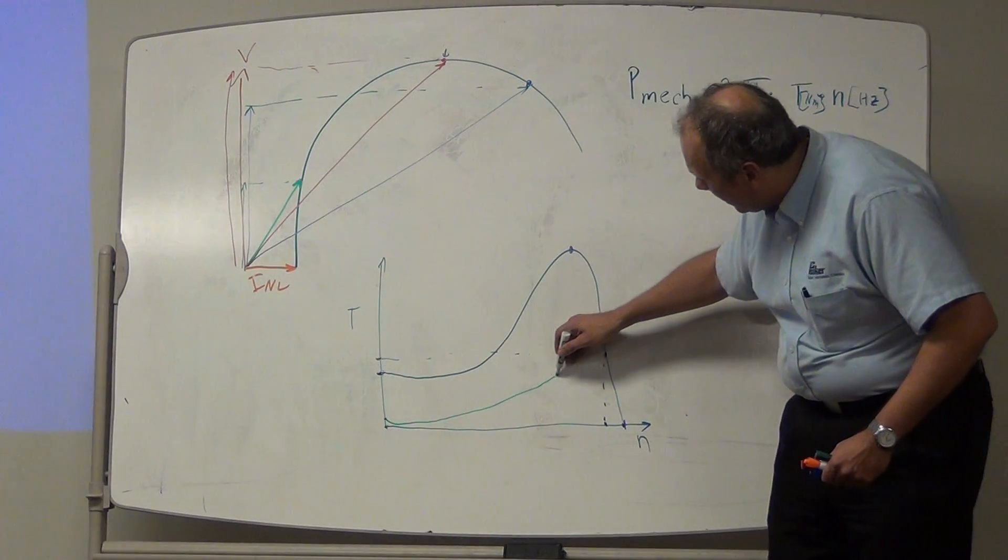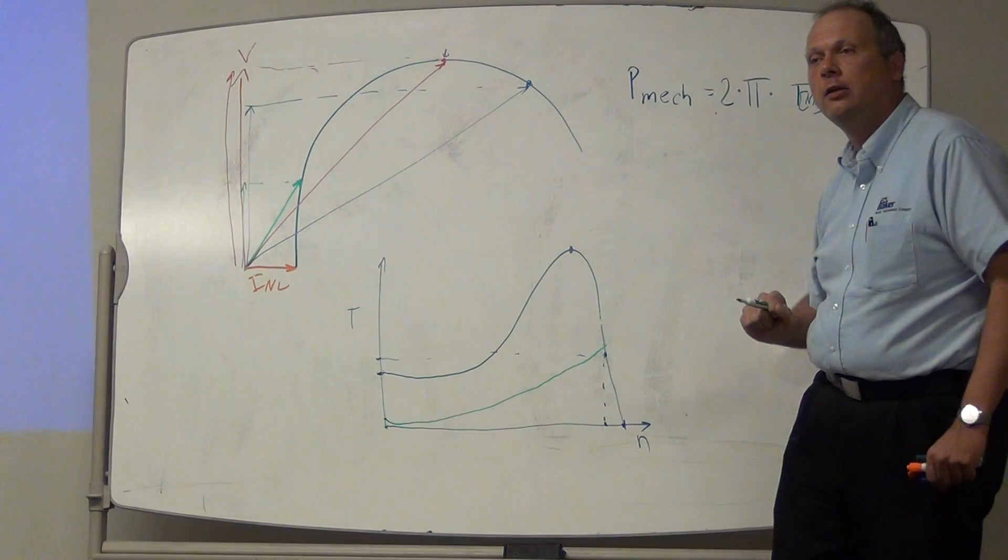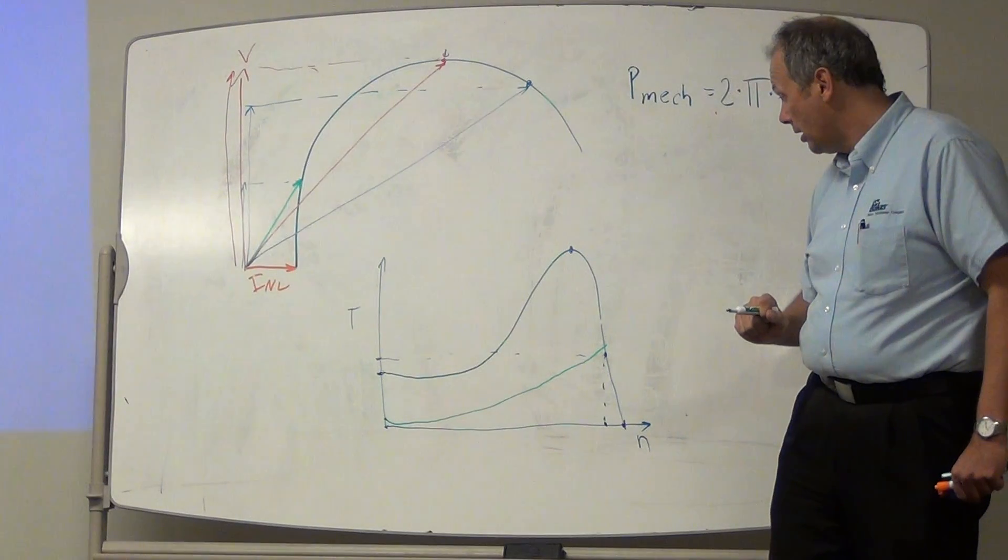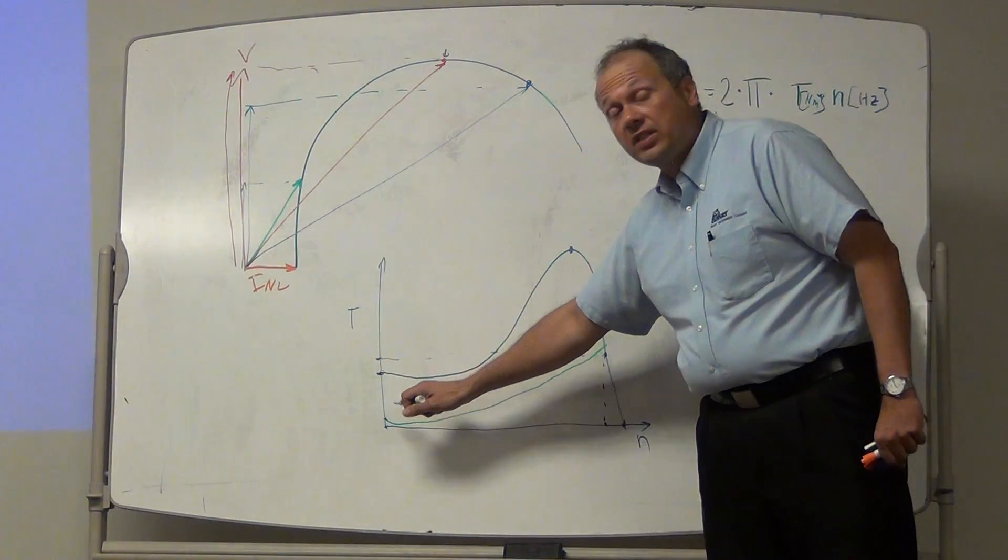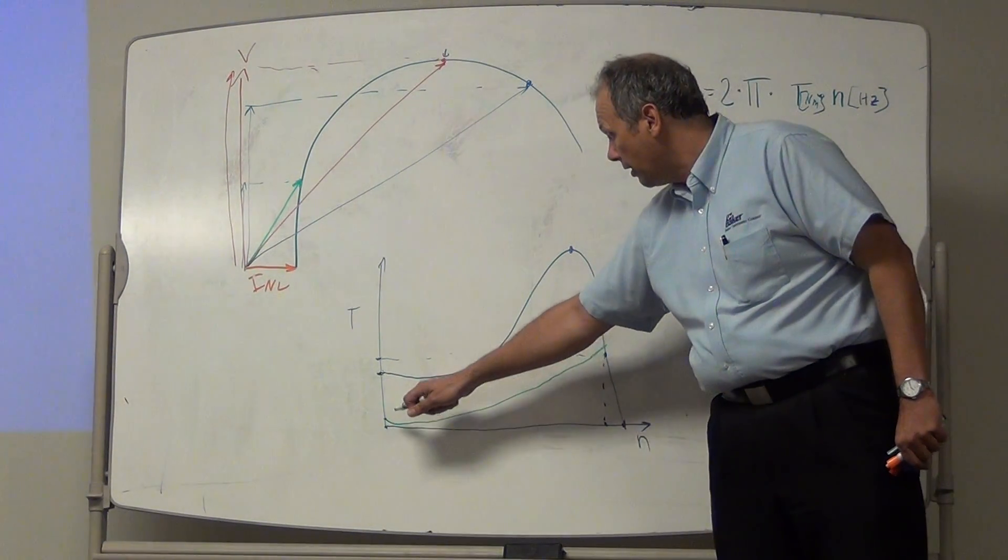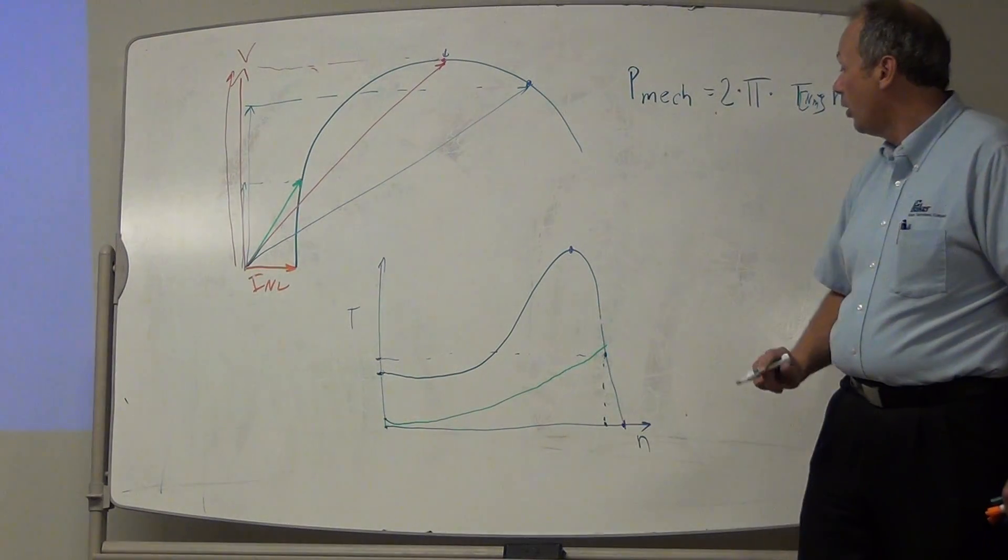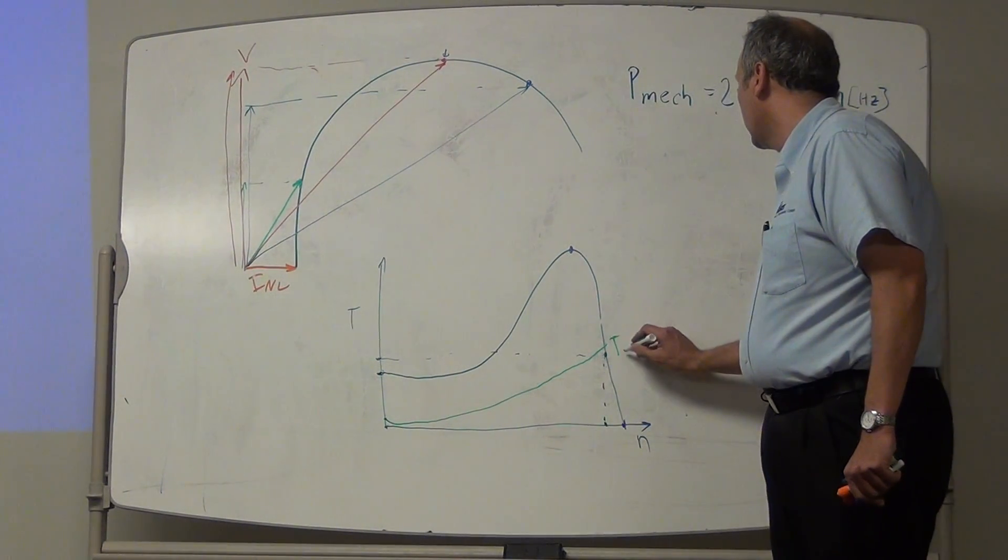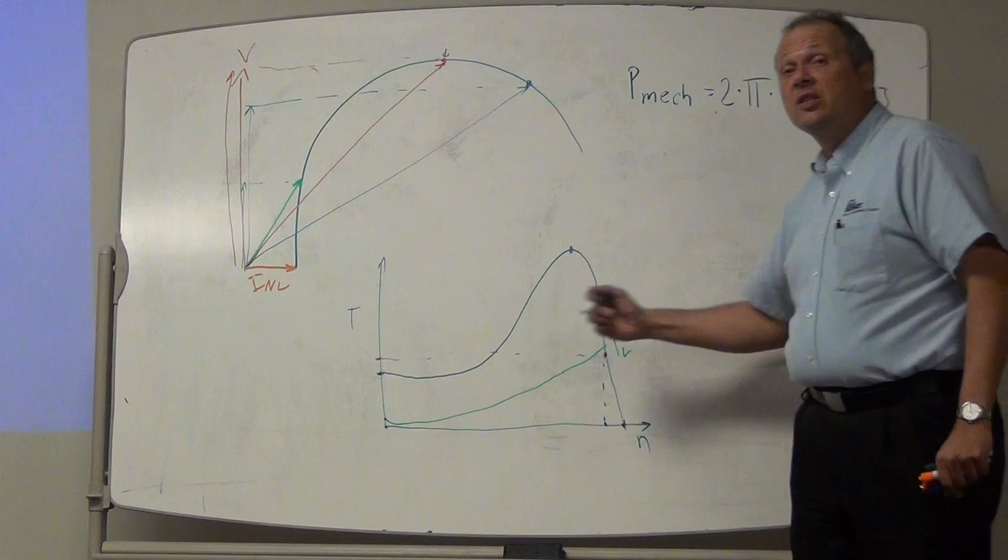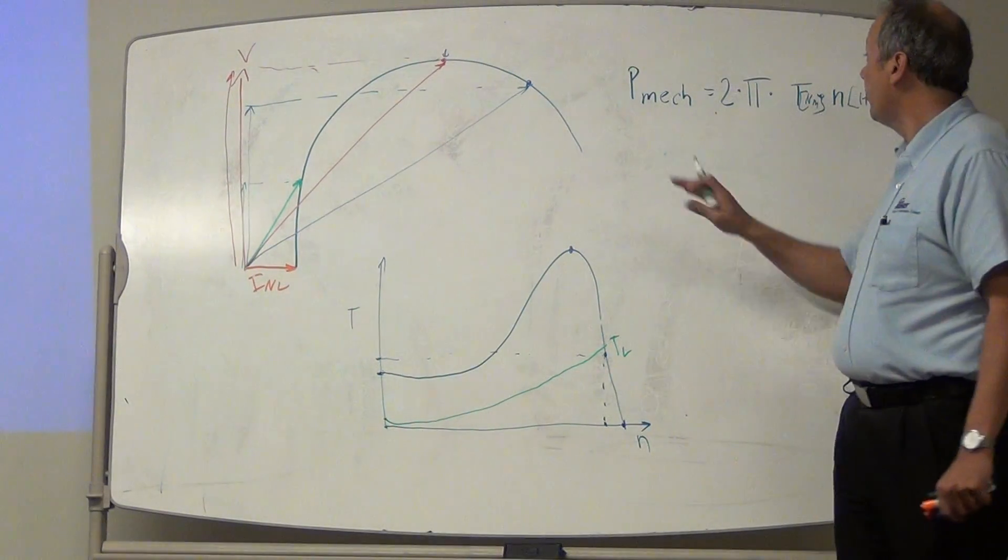And then I have some kind of a parabola-looking curve. So for centrifugal loads, this here, the torque goes up. This is my load torque, TL. It goes up with a square of speed. What does it mean for my power? That goes up with a square of speed. Then I multiply it with speed.